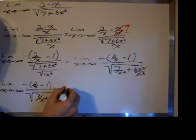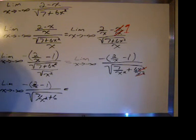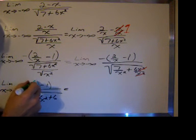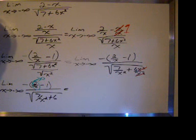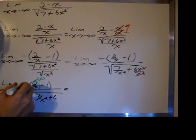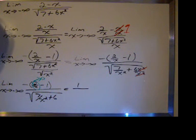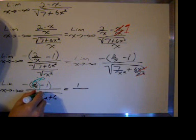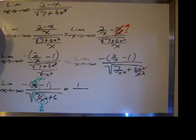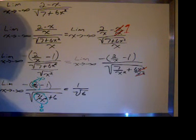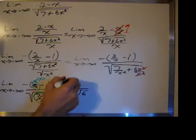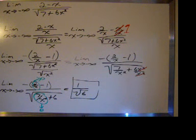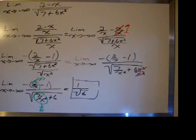Now we evaluate the limit. As x approaches negative infinity, 2 over x goes to 0, so the numerator goes to negative 1. Negative times negative 1 gives positive 1. As x approaches negative infinity, 7 over x squared goes to 0, and 6 stays as 6, so the denominator becomes the square root of 6. The limit as x approaches negative infinity of 2 minus x over the square root of 7 plus 6x squared is 1 over the square root of 6.